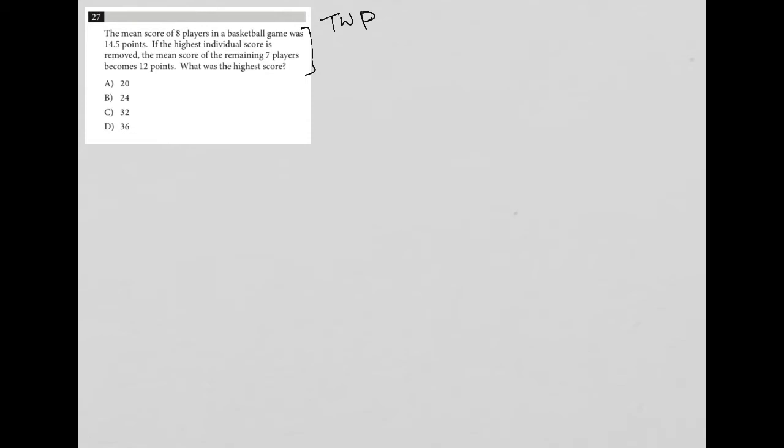The mean score of eight players in a basketball game was 14.5 points. OK, so I'm going to say that that means that we have a plus b plus c plus d plus e plus f plus g plus h all divided by eight is equal to 14.5.